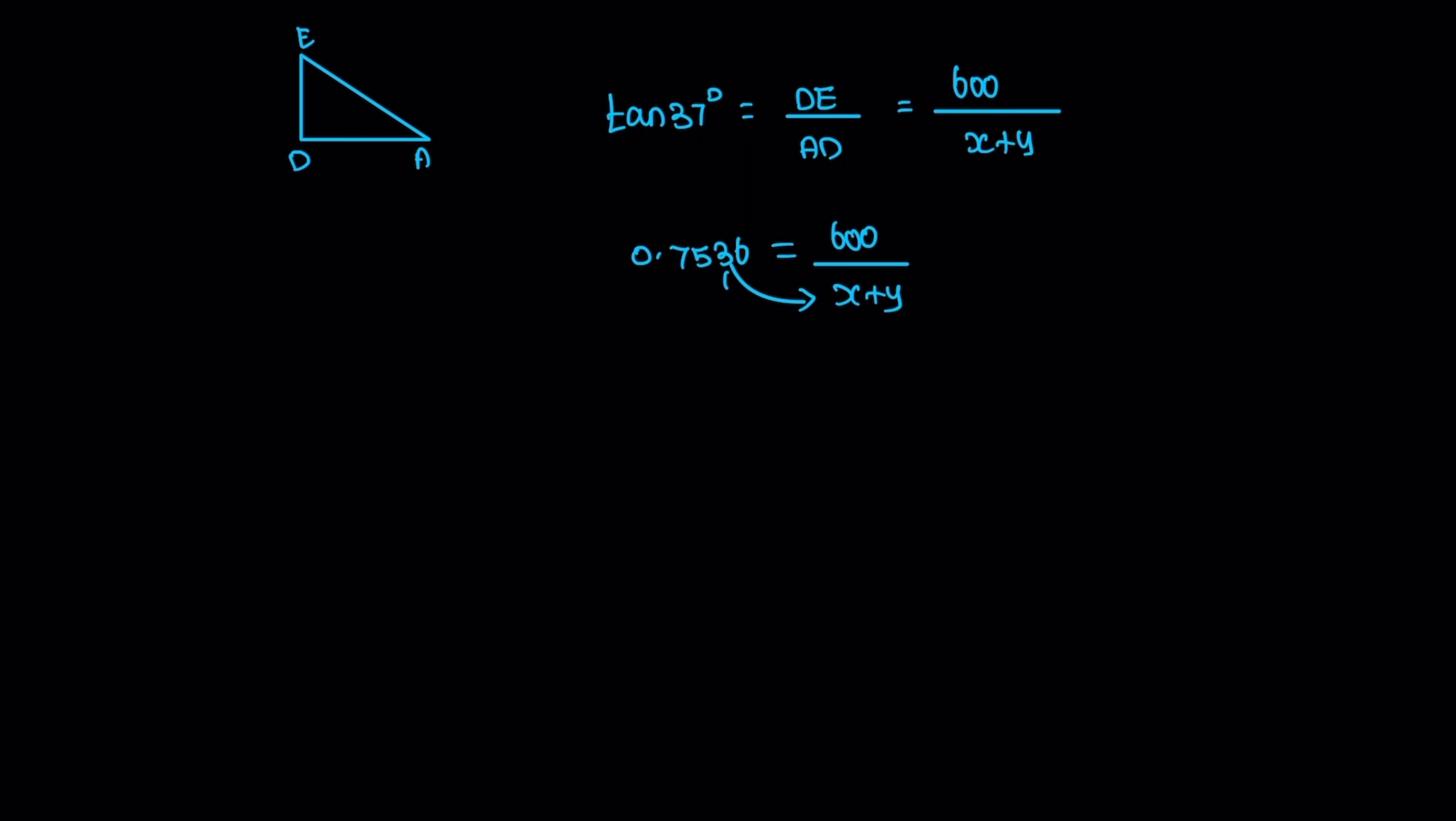Interchange: X plus Y equals 600 divided by 0.7536, which equals 796.178 meters.